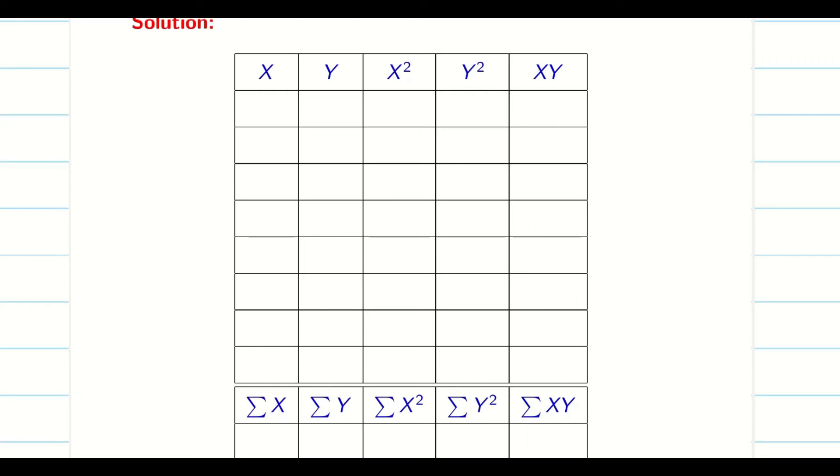We are going to solve the problem as it is. So we can use the first formula. It is very simple. Whenever there is a correlation or regression problem, just make a table which consists of these five columns: x, y, x square, y square and xy.